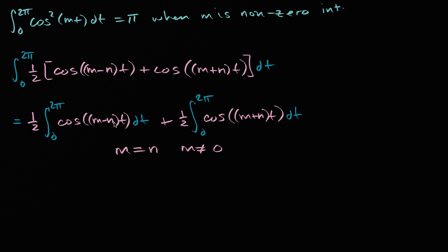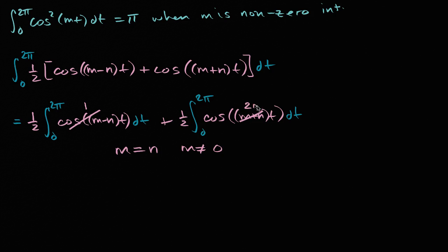In that situation, this first integral — if m is equal to n and m is not equal to zero — will have m minus m, giving us zero times t, so the cosine simplifies to one. And then the second integral will have m plus m, which simplifies to 2m. So let's rewrite the integrals.